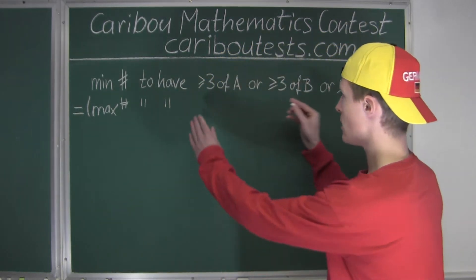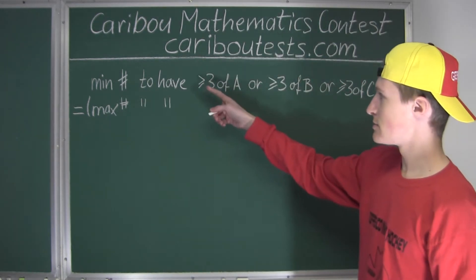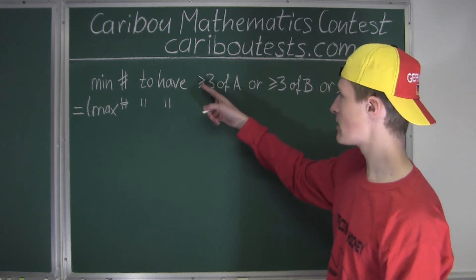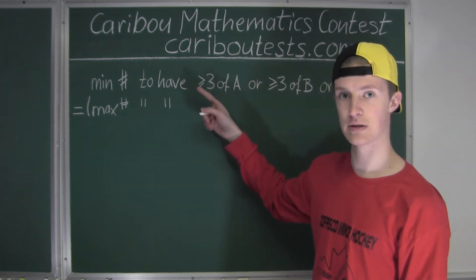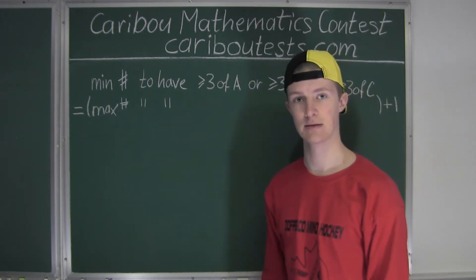Okay, so we have the maximum number to have, and now we want to have the exact opposite of this expression written here. So to make this opposite, anywhere we have a greater than or equals to sign—so here, here, and here—we will replace that with a less than sign.